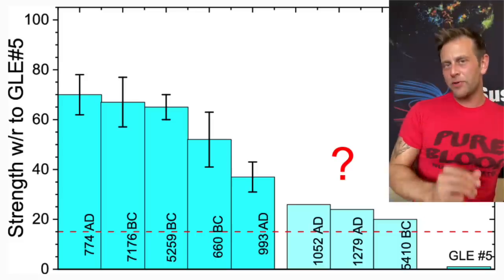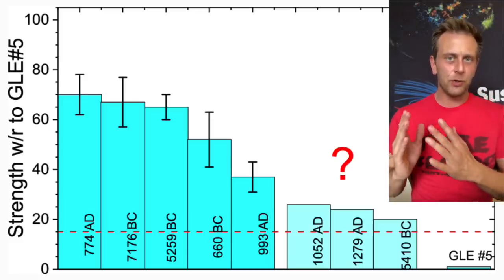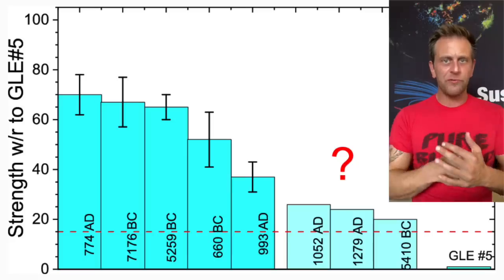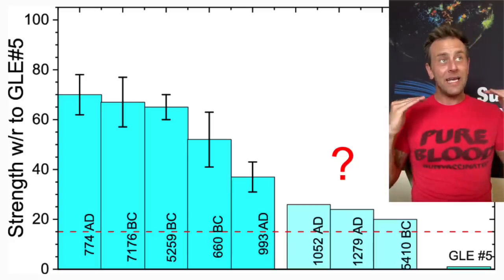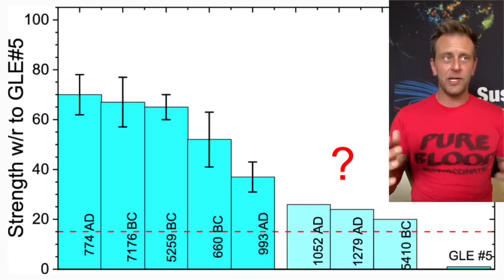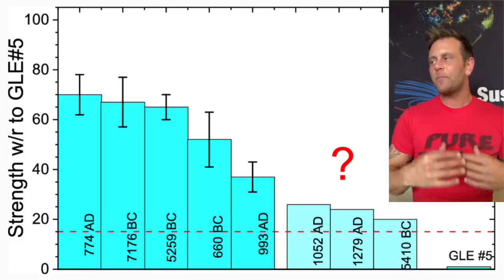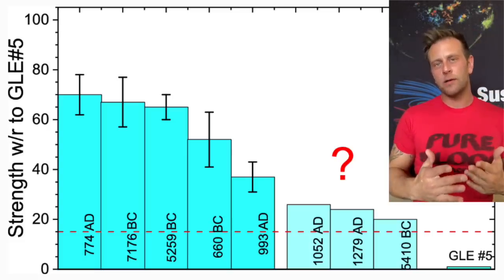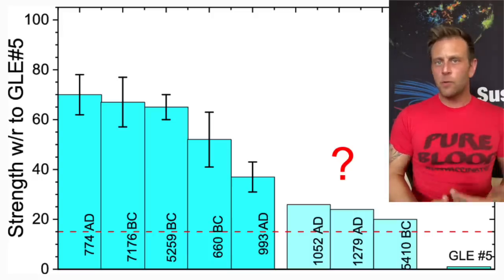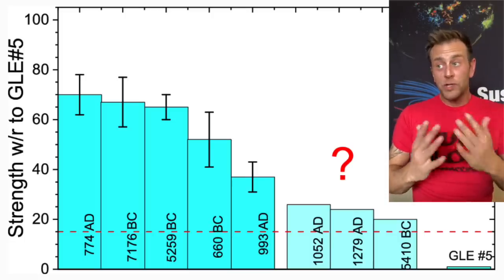Perhaps the more interesting part of this paper, though, was the GLE chart. Now, GLE simply just means ground-level enhancement. That's when we get a solar storm from a solar flare that is so powerful, it enhances at ground level the space-borne radiation and cascading breakout particles from that space weather event. Now, the biggest one on record was about 70 years ago. We've had some big ones since then, but nothing has matched that one. And that one was pretty phenomenal.